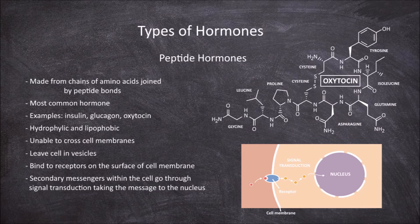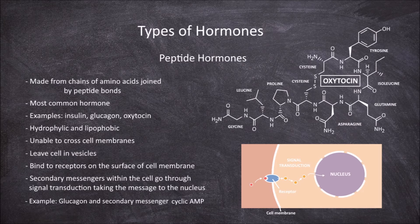An example of a secondary messenger is cyclic AMP, which is used in the secondary messenger cascade when the hormones glucagon and adrenaline bind to receptors on the cell surface.